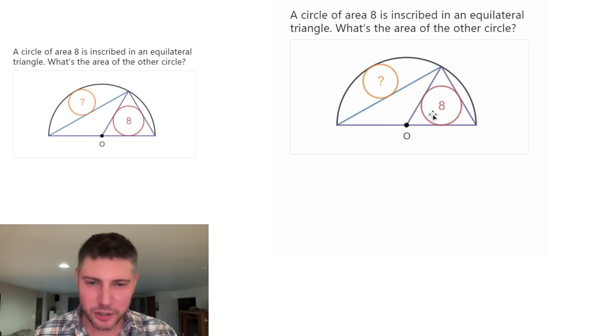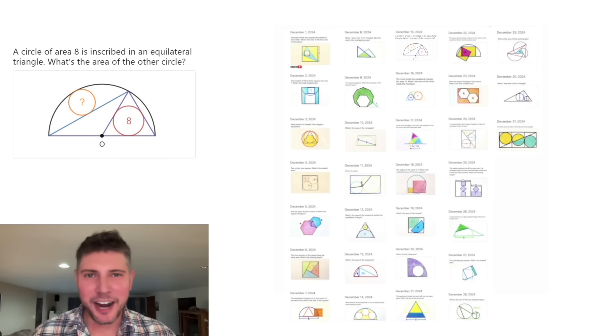Hey guys, this looks like a fun one. It's a circle inside of an equilateral triangle, and all of it is inside of a semicircle with another circle right here. The area of this circle is eight, and it wants to know what is the area of the other circle. And this is day 15 of our AgVent calendar.